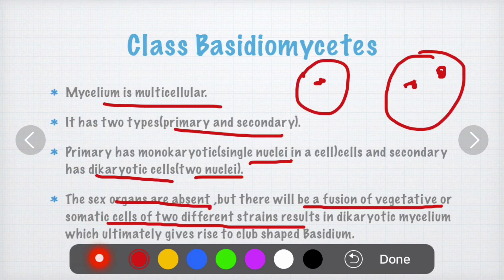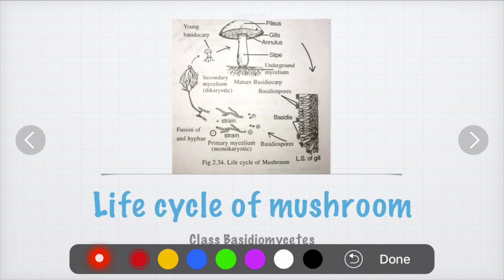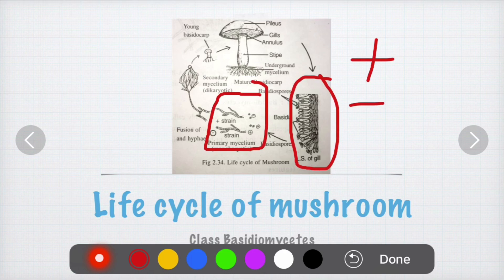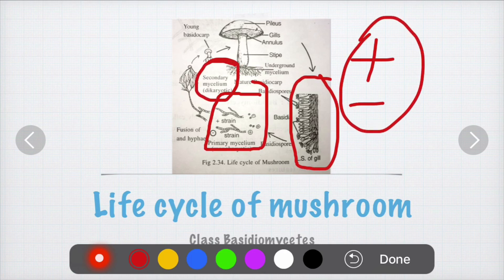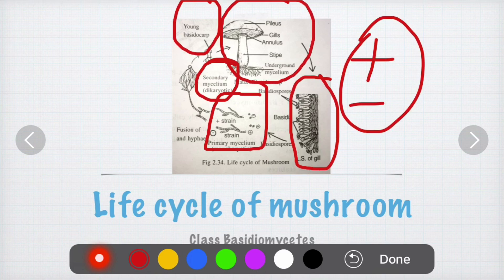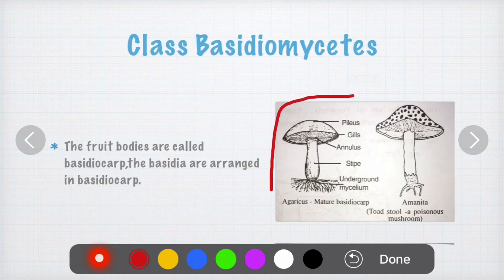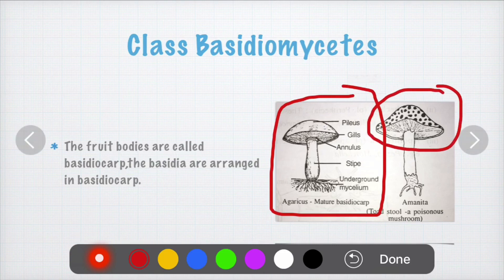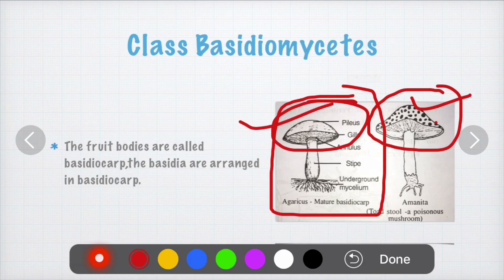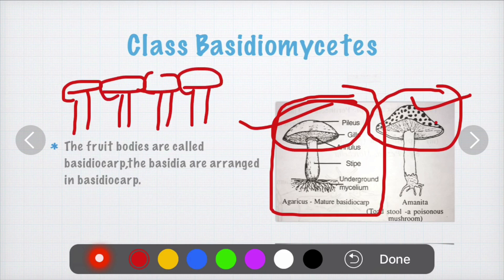In the life cycle of a mushroom, the basidia produce basidiospores. The positive and negative strains combine to form secondary mycelium, which constitutes a young basidiocarp that develops into a new mushroom. The mature basidiocarp is the fruiting body — some are edible, some are not. Basidiomycetes are called club fungi because mushrooms develop together in a population, not alone.